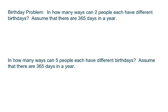There's 365 ways for the first person, and the second person can't have the same one, so they only have 364 choices. So that would be a total of 132,860 possible ways two people can have different birthdays.